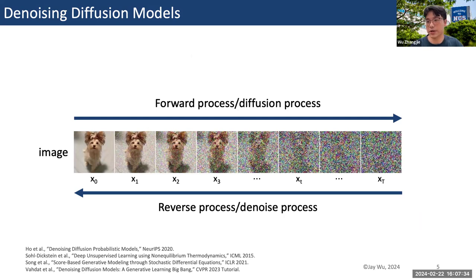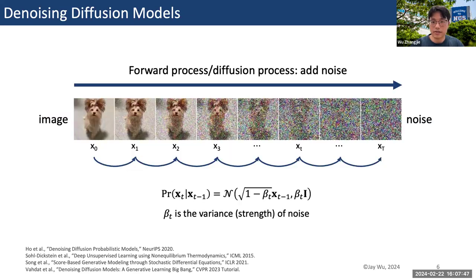The forward process is gradually adding noise to an image. The reverse process is to denoise the added noise. In the forward process, given the data point X-zero from the real data distribution, we define a forward diffusion process in which we add a small amount of Gaussian noise to the sample in T steps. This produces a sequence of noisy samples X-one to X-T, and the step size is controlled by the variance beta.